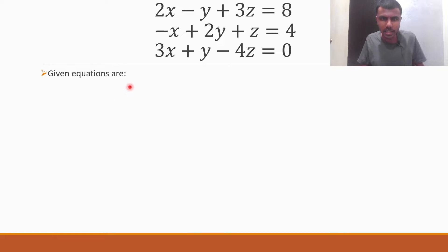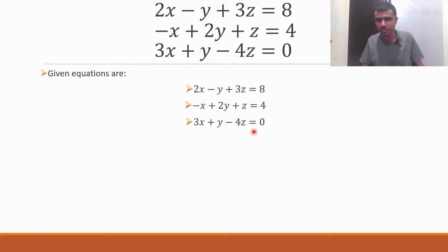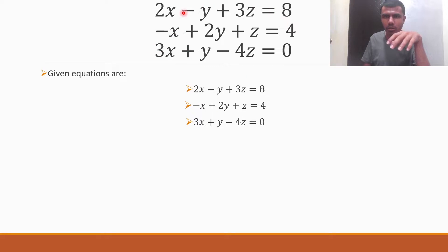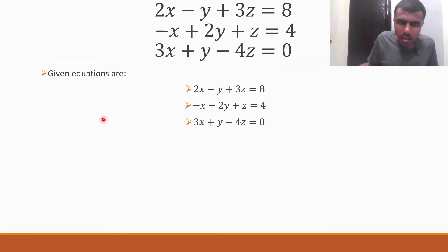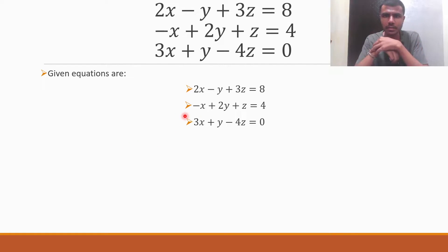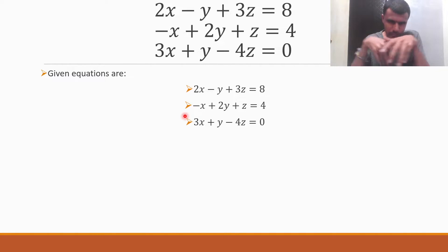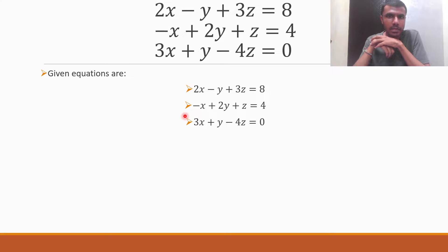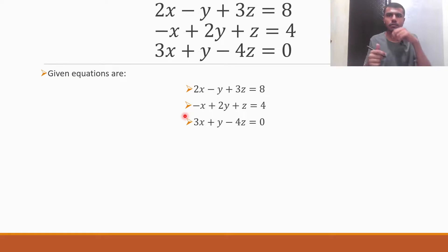So my given equations are these three. Now these are the given equations: 2x minus y plus 3z equal to 8, minus x plus 2y plus z equal to 4. Now I want to write them in matrix form.